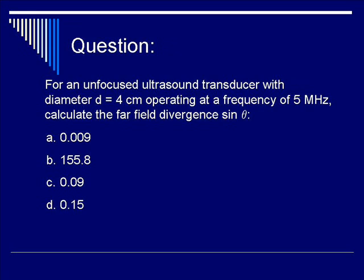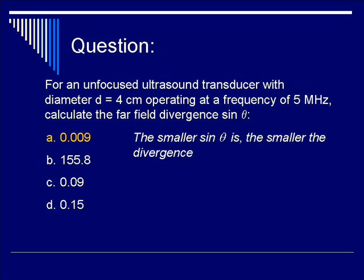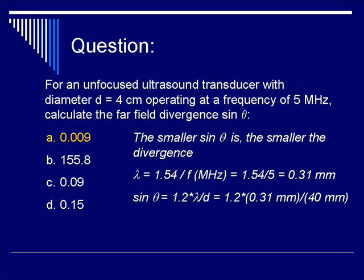The correct answer is A, 0.009. What does this number mean? For small angles theta, sine theta is proportional to theta. Therefore, smaller theta means smaller sine theta and smaller divergence. Lambda in this case is 1.54 divided by 5, which is roughly 0.31 millimeters. Calculating 1.2 lambda divided by D gives 0.009. Note that when you work out the actual angle theta, it is about 0.5 degrees.